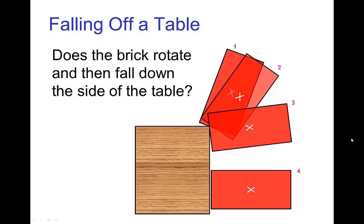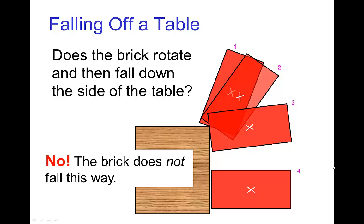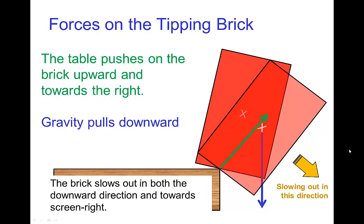Now one more thing about tipping. If a brick rotates and falls off the side of the table, it is not going to fall this way. It doesn't rotate around and then fall straight down the side.